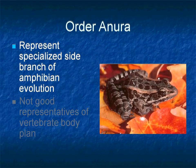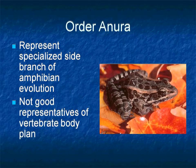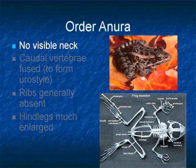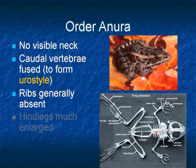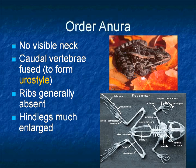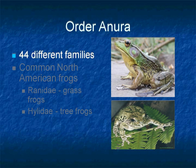Anurans represent a specialized side of amphibian evolution and are not a good representative of the vertebrate body plan. They have no visible neck, their caudal vertebrae are fused to form a structure called urostyle, no ribs are present, and their hind limbs are enlarged. They are unique in their own kind. Frogs and toads are divided into 44 different families.